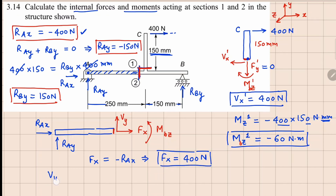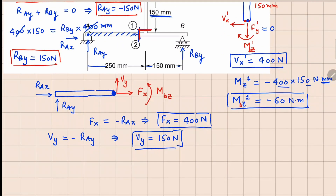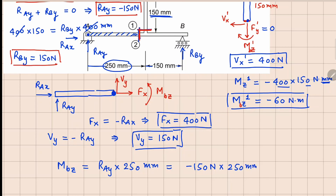The shear force VY equals minus RAY. Since RAY is minus 150 newtons, VY equals 150 newtons. Taking moment about this point, MBZ balances the moment due to RAY over a distance of 250 mm. So MBZ equals RAY times 250 mm, which is minus 150 newtons times 250 mm, giving MBZ equals minus 37.5 newton-meters.